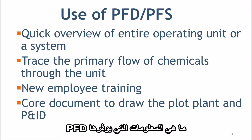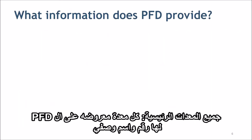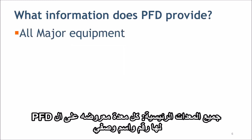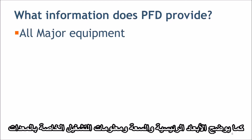What information does PFD provide? A typical PFD will include all major equipment. Each equipment shown on PFD has a unique equipment number and a descriptive name. It also shows main dimensions, capacity, and operating information of the equipment.